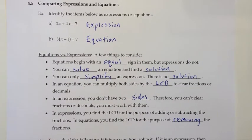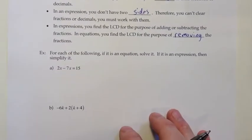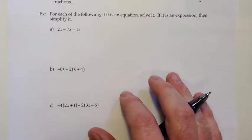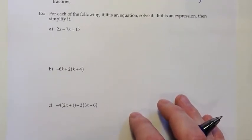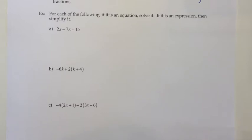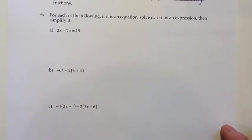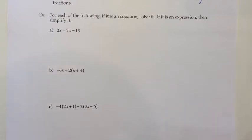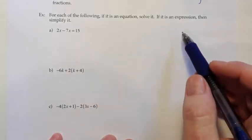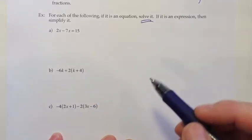Let's look at some examples. For each of the following: if it's an equation, solve it; if it's an expression, simplify it. The very first thing we want to do — we don't have to write it down, but we need to make a mental note — is to think about which type we have. For Part A, I see an equal sign, so that means I've got an equation. According to our directions, if it's an equation, we want to solve it.